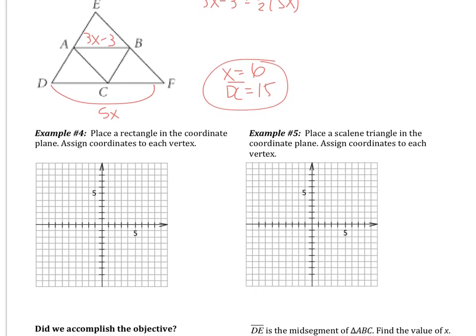So that's the midsegment. Last part of this section is coordinate proofs. So for example, number 4, it says place a rectangle in the coordinate plane and assign coordinates to each vertex. All that means is I place a rectangle anywhere that I want. So I normally like to start my figures at the origin. So I'm going to draw this rectangle right here.